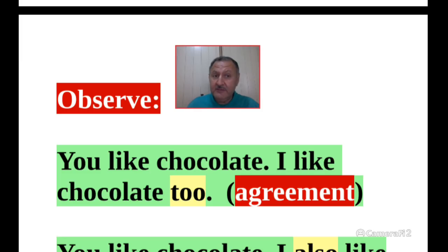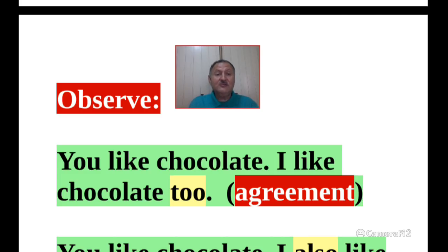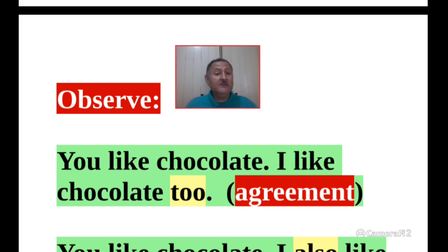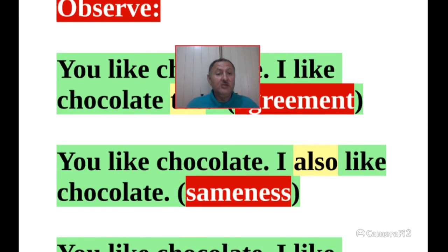Observe: You like chocolate — I like chocolate too. When we use this expression, we really want to convey agreement — that we agree, that we do the same. It's like an agreement. You like chocolate — I like chocolate too. Now look at this: You like chocolate — I also like chocolate.